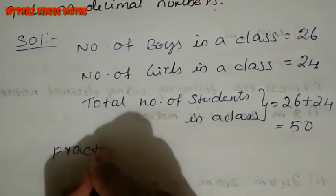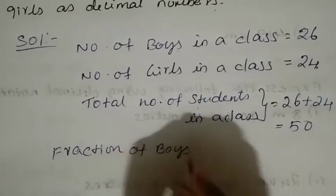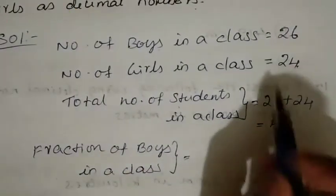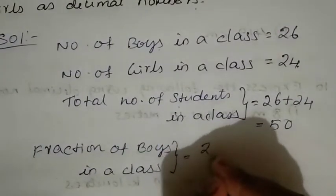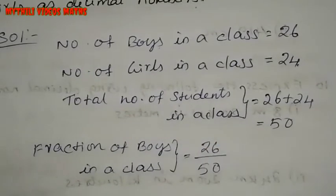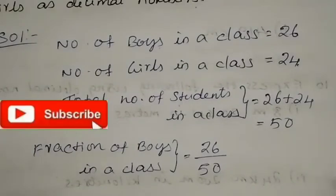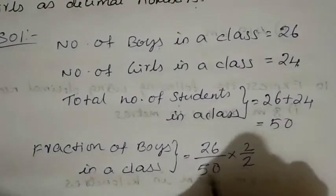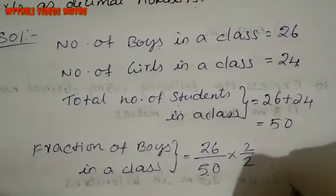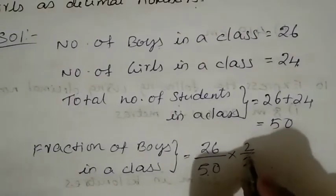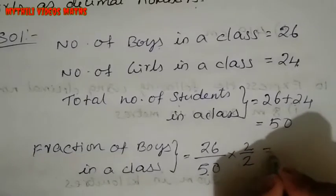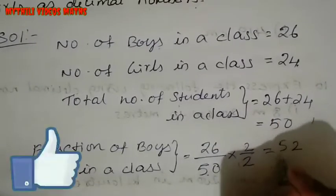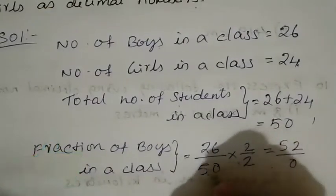Fraction of boys in class: 26 divided by total (50). To convert to a decimal with denominator 100, multiply numerator and denominator by 2. So 26 divided by 50 becomes 52 divided by 100. Then 2 into 0 is 0, and we place the decimal: that gives us 0.52. So the decimal fraction of boys is 0.52.